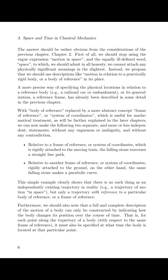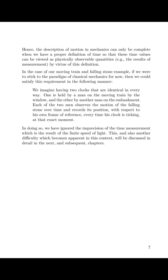Furthermore, we should also note that a full and complete description of the motion of a body can only be constructed by indicating how the body changes its position over the course of time. That is, for each point along the trajectory of a body with respect to the same frame of reference, it must also be specified at what time the body is located at that particular point. Hence, the description of motion in mechanics can only be complete when we have a proper definition of time so that these time values can be viewed as physically observable quantities — e.g., the results of measurement — by virtue of this definition.